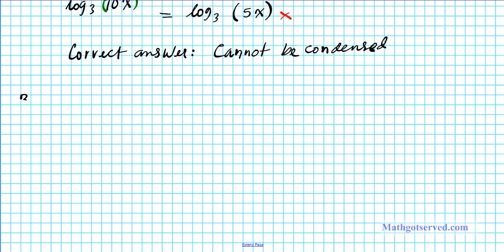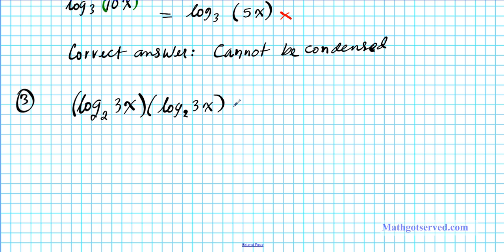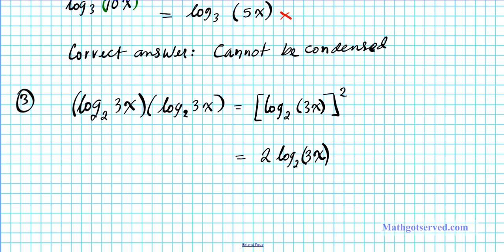Let's take a look at mistake number three. What if you have log base 2 of 3x multiplied by log base 2 of 3x? Since the two logarithmic factors are identical, a student might express this as log base 2 of 3x raised to the second power, and then apply the power property to write it as 2 log base 2 of 3x. Of course, this is wrong.